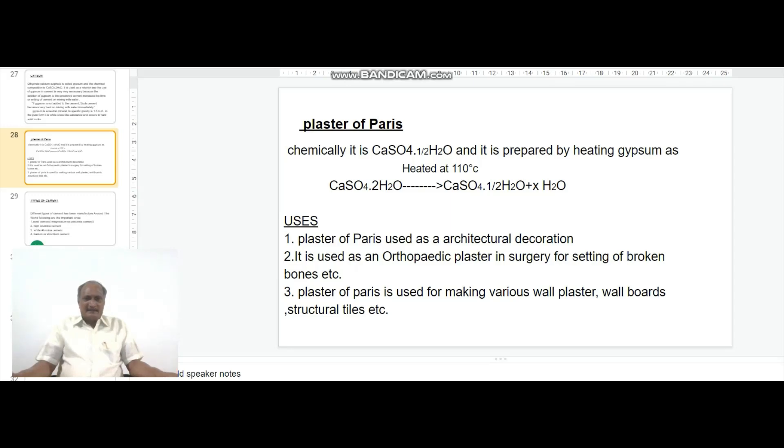Uses of plaster of Paris: Plaster of Paris is used as an architectural decoration. It is used as an orthopedic plaster in surgery for setting of broken bones. Plaster of Paris is used for making various wall plaster, wall boards, structural tiles, etc.